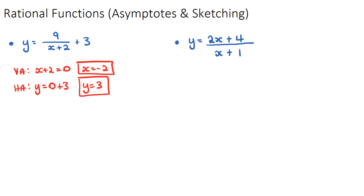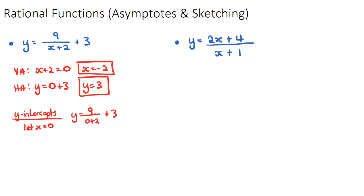Now let's find the intercepts. For the y-intercept, we let x equal zero. Substituting gives y equals nine over zero plus two plus three, which is nine over two plus three. Nine over two is 4.5, and adding three gives 7.5. So the y-intercept is at y equals 7.5.